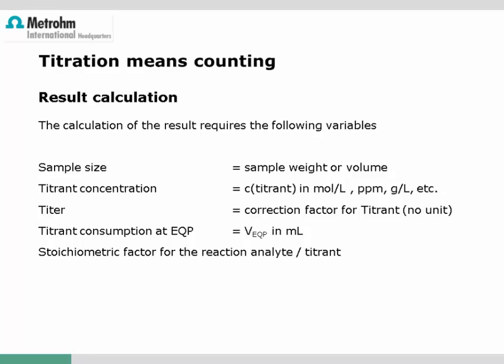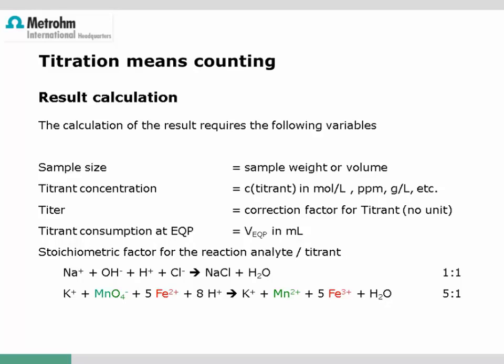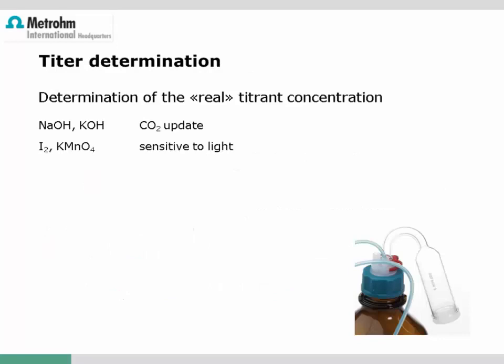Finally, to calculate the exact analyte concentration, we also need to know the stoichiometry of the chemical reaction, considered in a stoichiometric factor. This factor is one for titrations of a monoprotic acid with a monoprotic base, but can be different — especially for redox titrations. For example, if permanganate is used for the titration of bivalent iron, then the factor is five.